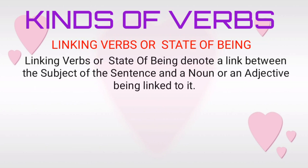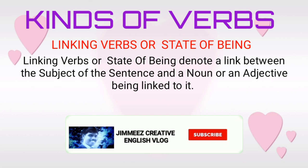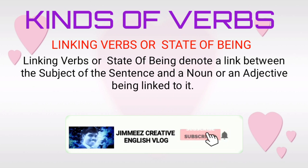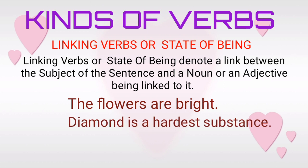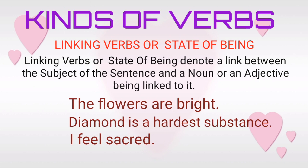Linking verbs or state of being denote a link between the subject of the sentence and a noun or an adjective being linked to it. Examples: The flowers are bright. Diamond is the hardest substance. I feel scared. Remember, the verbs are, is, and feel denote a link between the subject and a noun or an adjective.